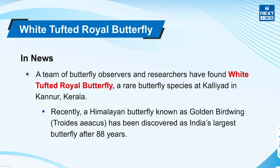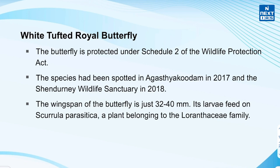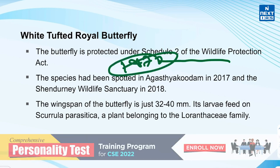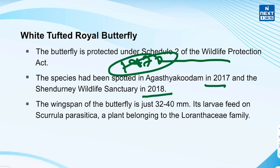Now let's know about the White Tufted Royal Butterfly. It was in the news because recently researchers found it at Kannur in Kerala. A Himalayan butterfly known as the Golden Birdwing has also been discovered as India's largest butterfly after 88 years. The White Tufted Royal Butterfly is protected under Schedule II of the Wildlife Protection Act 1972. It had been spotted in Agasthyakodam in 2017 and Shendurney Wildlife Sanctuary in 2018. The butterfly is just 32 to 40 mm and its larvae feed on Scurrula parasitica, a plant belonging to the Loranthaceae family. It is a rare butterfly species and the survival of such rare species is under severe threat.